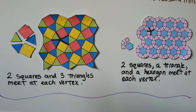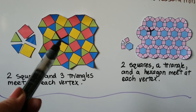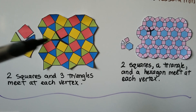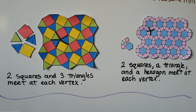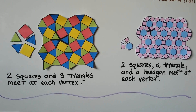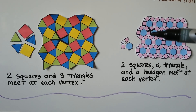Looking at this pattern, where shapes meet at a vertex we see a red square, a green triangle, a blue triangle, a yellow square, and another blue triangle — so two squares and three triangles meet at each vertex. In another pattern, two squares, a triangle, and a hexagon meet at each vertex — you can see the hexagon, two squares, and a triangle meeting right there.